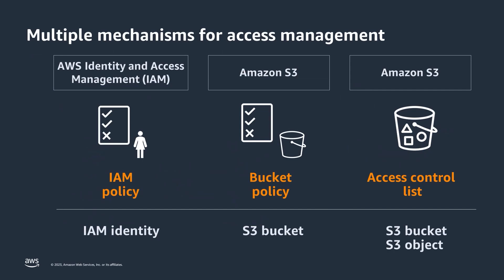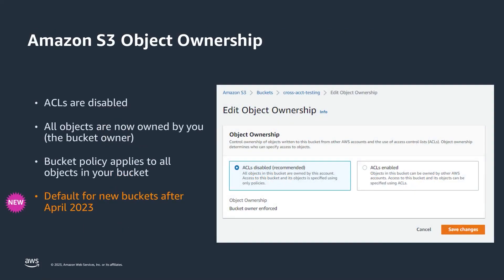Amazon S3 provides multiple mechanisms for access management: IAM policies, S3 bucket policies, and S3 access control lists. ACLs predate AWS Identity and Access Management — it's the legacy method to manage cross-account access to S3 resources. We recommend disabling ACLs to simplify cross-account access management.